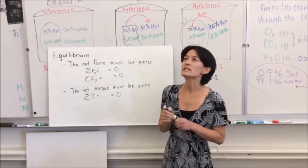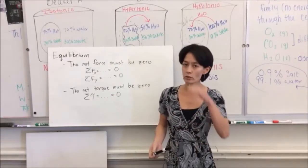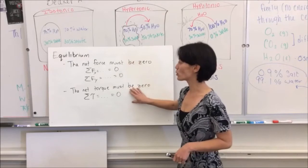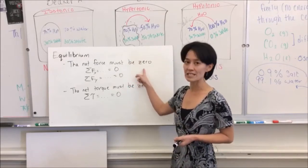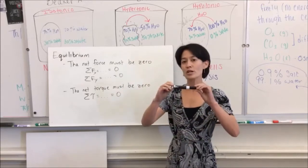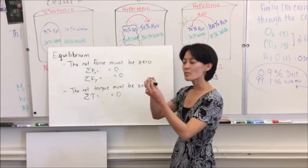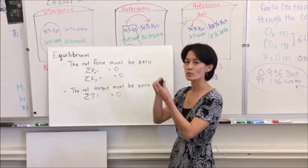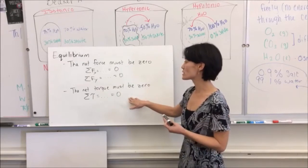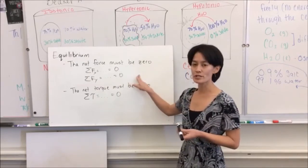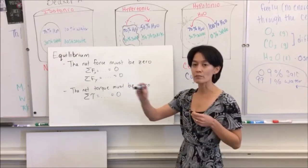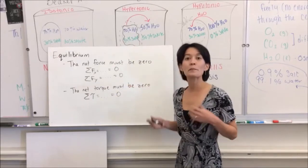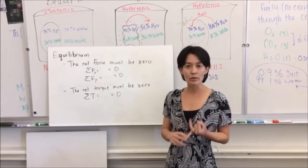You can have something that is in translational equilibrium and not be in rotational equilibrium. An example would be where an object is not translating - not moving side to side or up and down - but it could still be rotating. Conversely, I can have something that's not rotating but is still definitely moving, so it's not in translational equilibrium but is in rotational equilibrium. In order for something to be completely static, it must have both translational and rotational equilibrium.